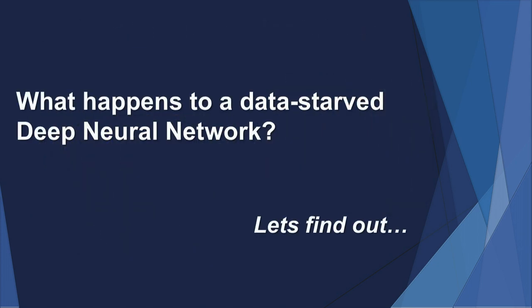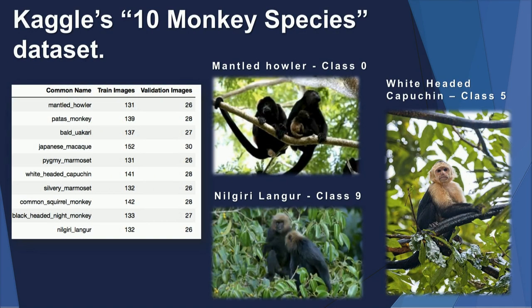So what happens to a really data-starved deep neural network? I found a dataset on Kaggle called the 10-monkey-species dataset — one of the open datasets on Kaggle. It has 10 classes of monkeys, and every one of them has about 130 training images and about 20 to 30 validation images. This is not enough data. This is the definition of not enough data.